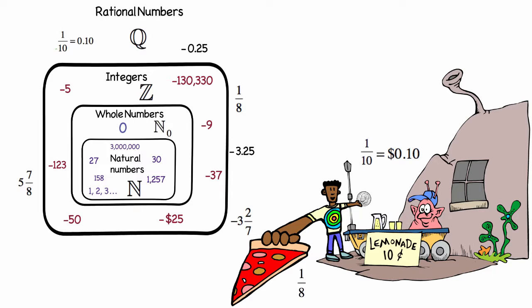All decimals that terminate, such as 3.25, or the decimals that repeat, such as .3333, where the 3 goes on forever, can be written as a fraction. You might have recognized that last decimal is equal to one-third.